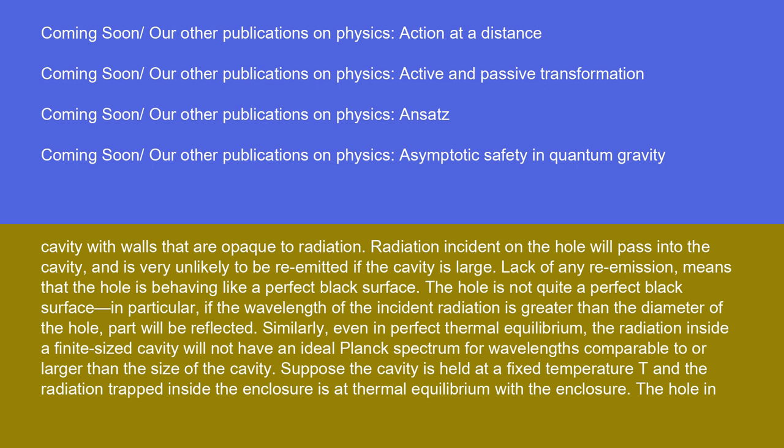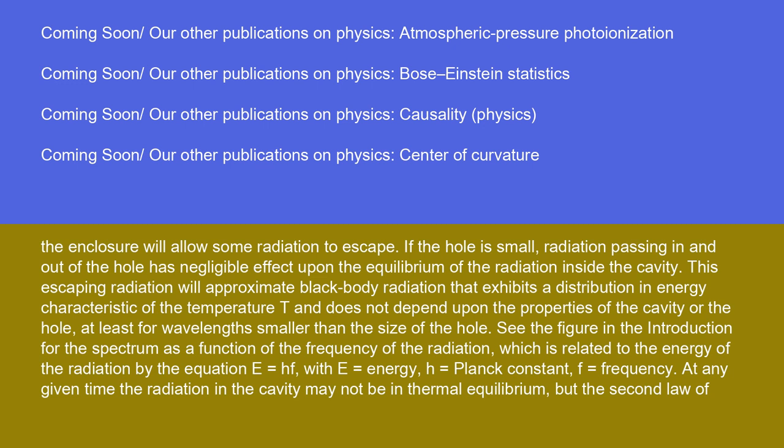The hole is not quite a perfect black surface. In particular, if the wavelength of the incident radiation is greater than the diameter of the hole, part will be reflected. Similarly, even in perfect thermal equilibrium, the radiation inside a finite-sized cavity will not have an ideal Planck spectrum for wavelengths comparable to or larger than the size of the cavity. If the hole is small, radiation passing in and out has negligible effect upon the equilibrium inside, and this escaping radiation will approximate black body radiation with an energy distribution characteristic of temperature T, not depending upon the properties of the cavity or hole, at least for wavelengths smaller than the size of the hole.